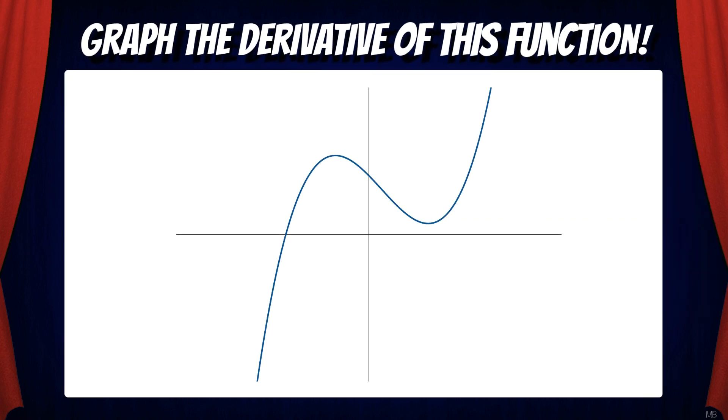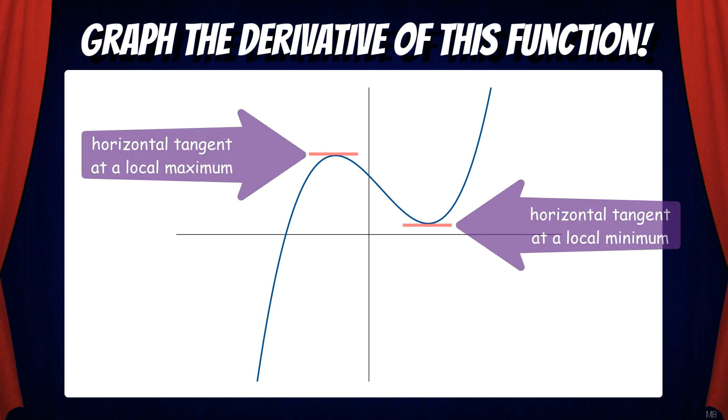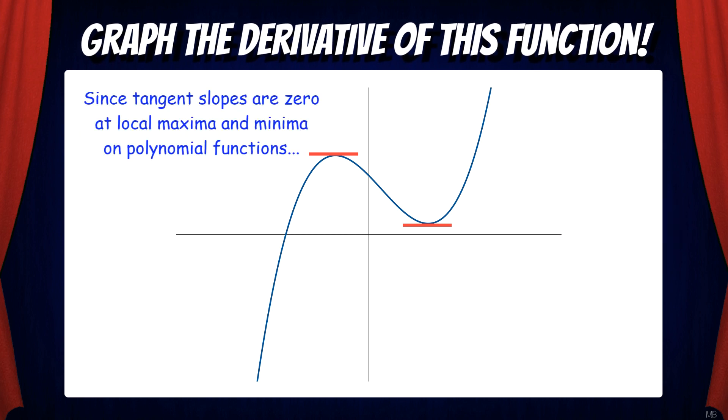Let's explore an example. Suppose we need to graph the derivative of this function. Let's start by looking for horizontal tangents. These will occur at maxima and minima. Here we can see we have two horizontal tangents. Since tangent slopes are zero at local maxima and minima on polynomial functions, that means these points correspond to x-intercepts on the derivative function.